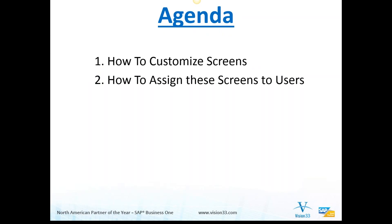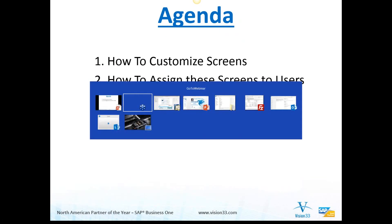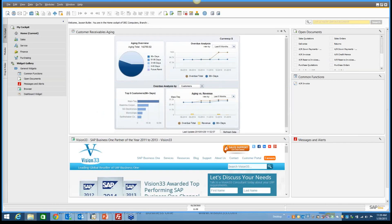Today, we're going to be doing something pretty simple. We're going to be looking at this new screen customization feature in version 9.1, and it really just has two pieces: how to customize screens, and how to assign these screens to users so when they log in, that's the default screen they will use. So without anything further, let's take a look at SAP Business 1 and find out how to do it.